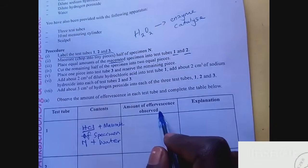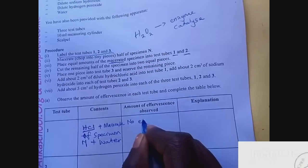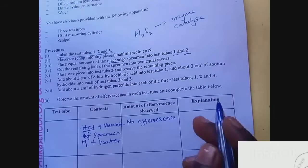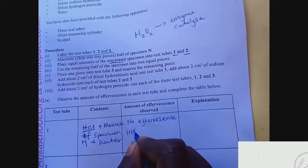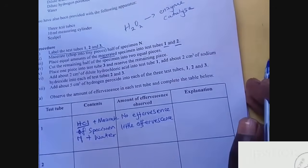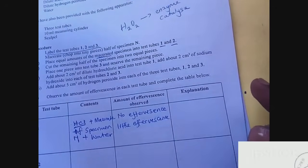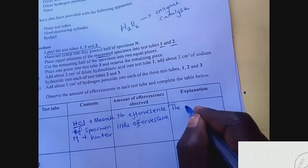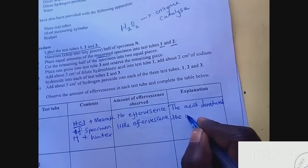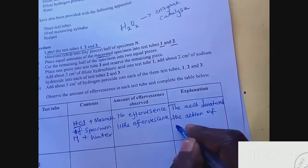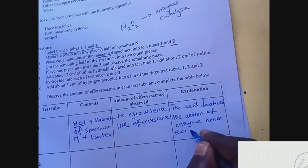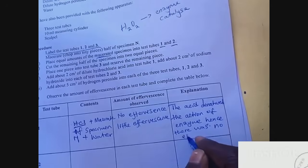Here, the amount of effervescence: there was no effervescence, no effervescence, because the enzyme was denatured. For the explanation, you'll say the acid denatured the action of enzyme, hence there was no effervescence.